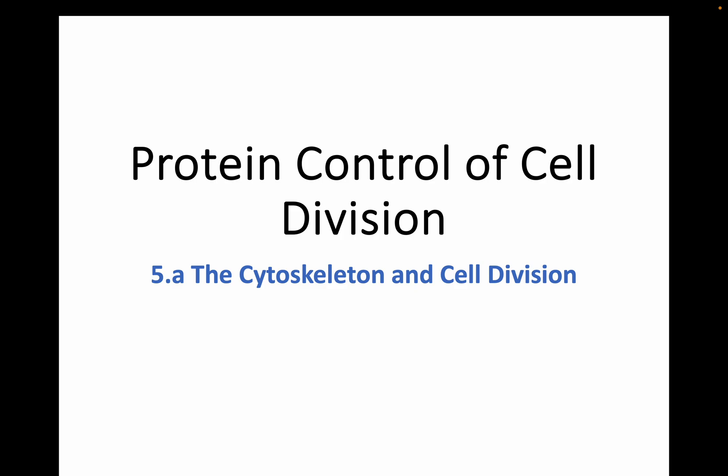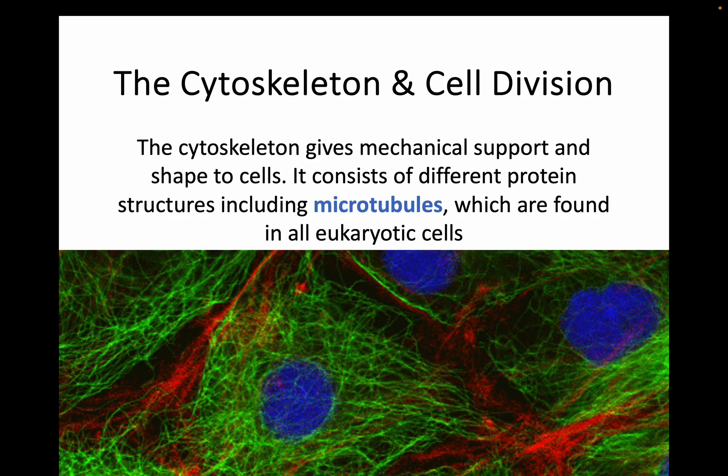This whole key area of protein control of cell division is, as the name suggests, going to be focusing on cell division or mitosis that you hopefully remember from National 5. We're going to go into a lot more detail about the process of mitosis and separate all the different parts up into the individual names and what goes on. But also, as the name suggests, we'll be looking at the control of this process as well. So let's get started on Part A.